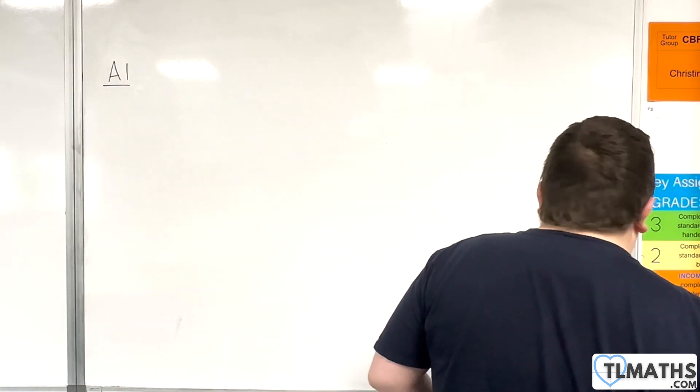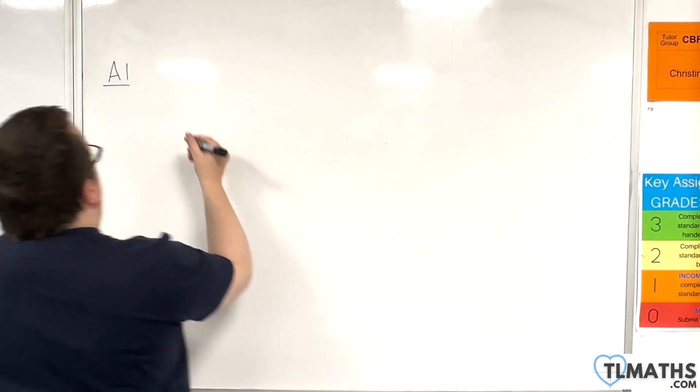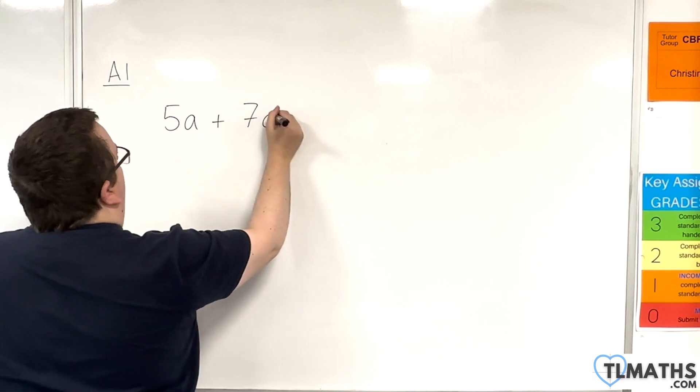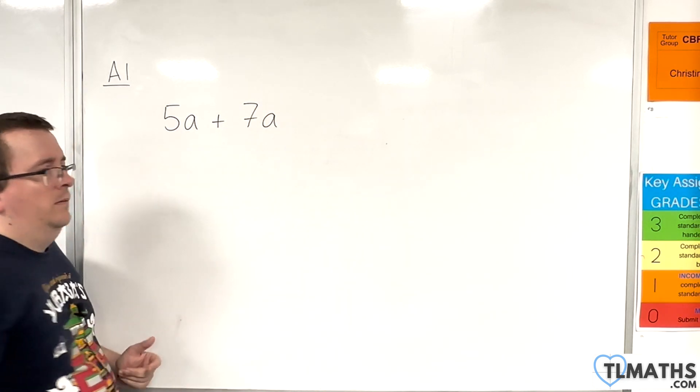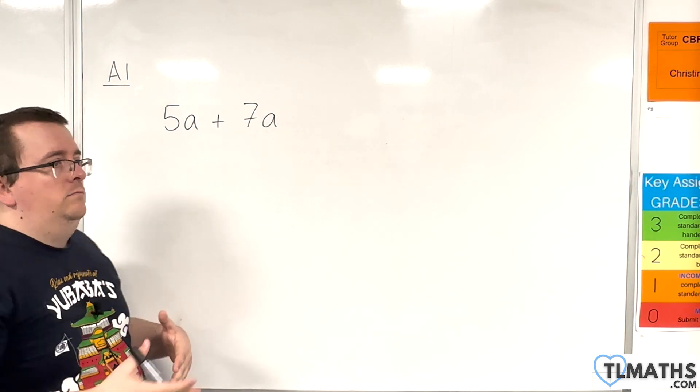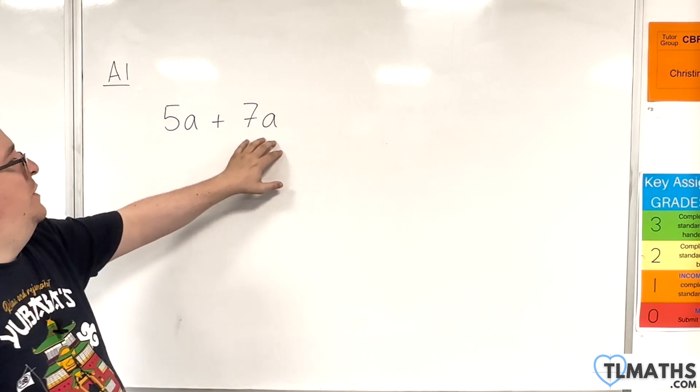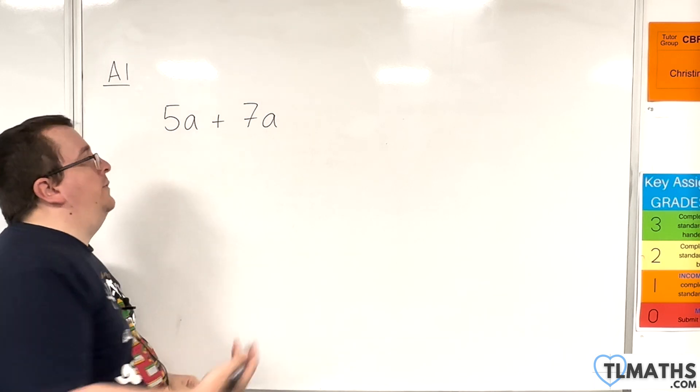Okay, so now we've got this idea that we could add some x's together. So let's look at this. Let's say I've got another example. I've got 5a and I'm adding on 7a. Now, I've changed letter. Shouldn't make a difference here, right? I've got 5a's, I've got another 7a's, so in total I'll have 12a's.